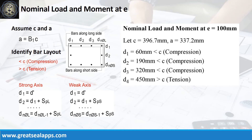To get the nominal load and moment at E equals 100 mm, let neutral axis C equals 396.7 mm and height of stress block A equals 337.2 mm. Given length of column equals 510 mm and steel covering equals 60 mm, follow the given computations to get the distance of each bar layer from the edge of the column and force type relative to the neutral axis.